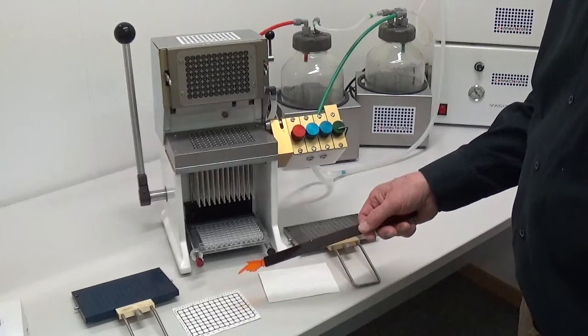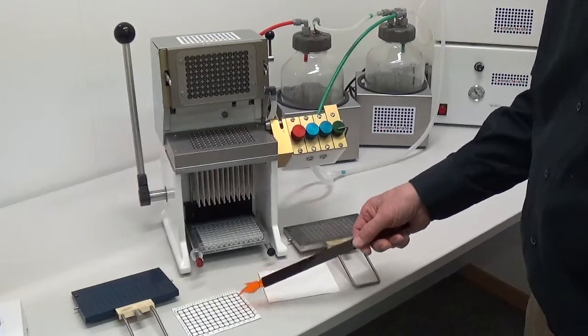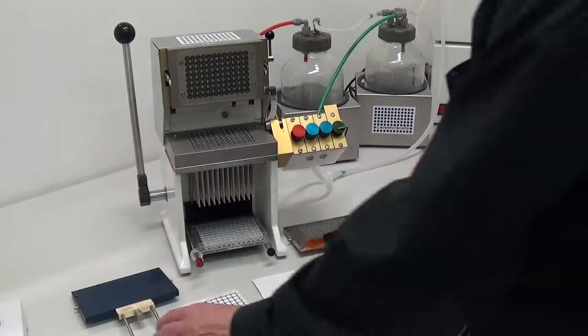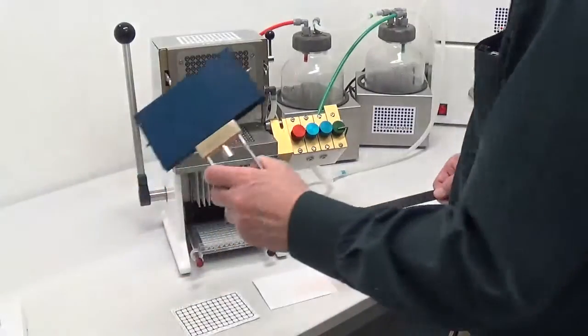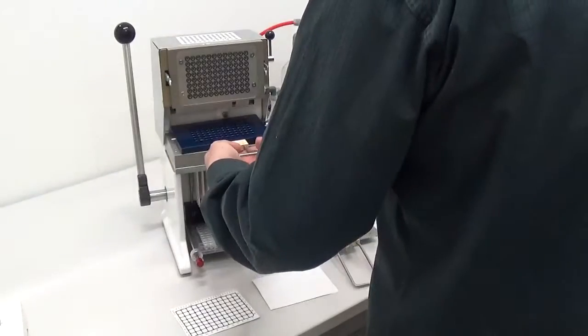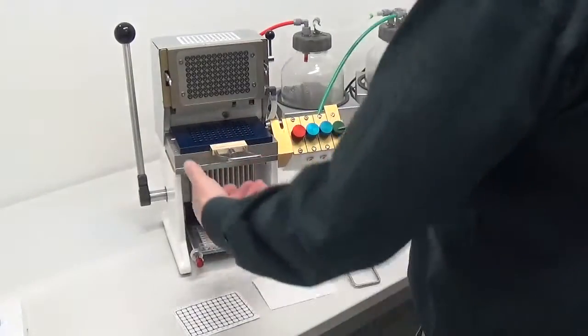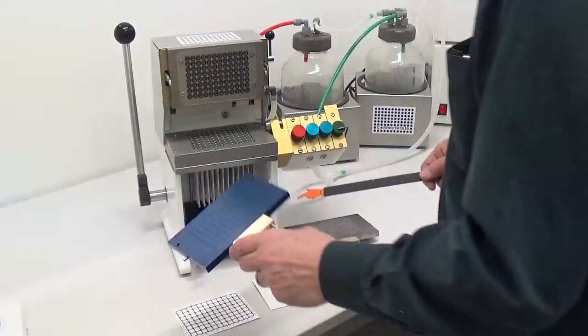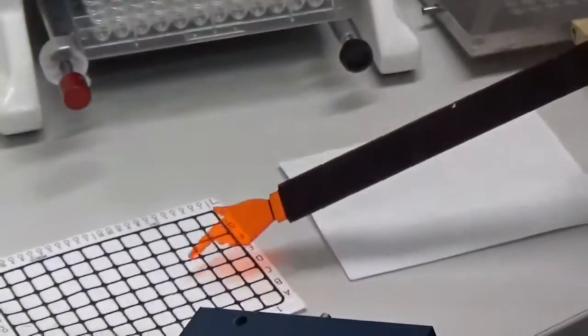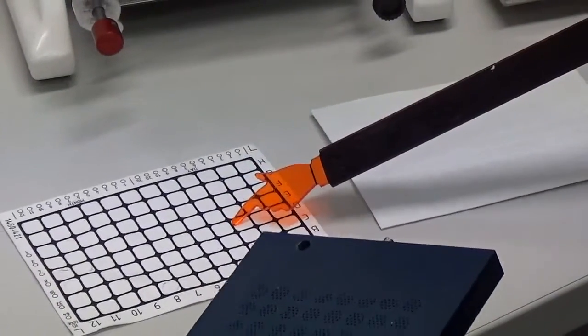If you decide to use filter mats for harvesting, you have first to place a filter holder plate on the pipetting head. This filter holder plate is blue for gridded filter mats.